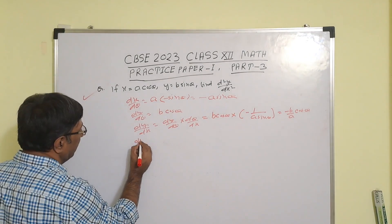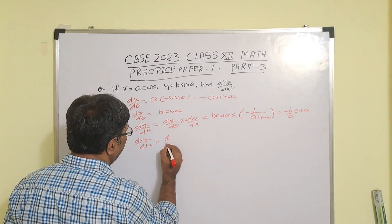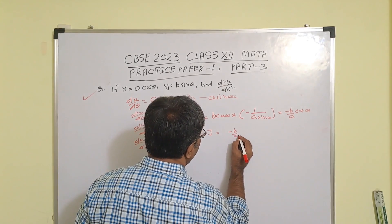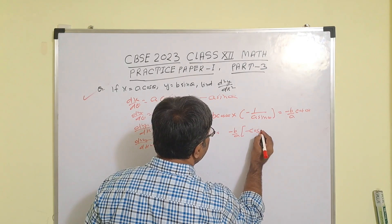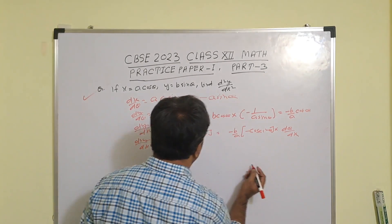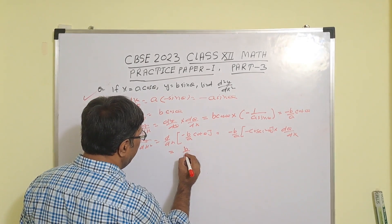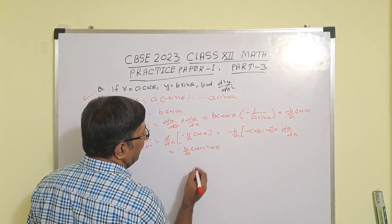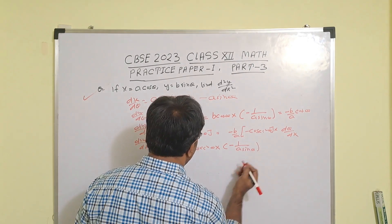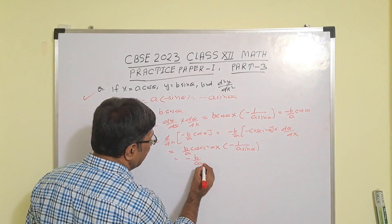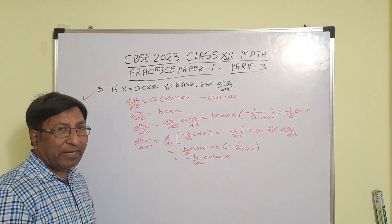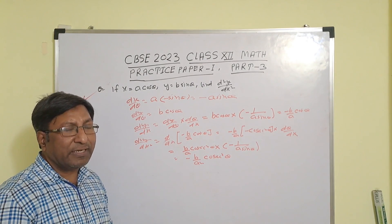Now find d²y/dx² = d/dx of −(b/a)·cosθ. Since −b/a is constant, differentiate cosθ to get −sin θ... applying the chain rule with dθ/dx = −1/(a·sinθ). The negatives cancel, giving −(b/a²) · cos²θ/(sin³θ) — so the correct answer is −b/(a²·sin³θ) × cos²θ.